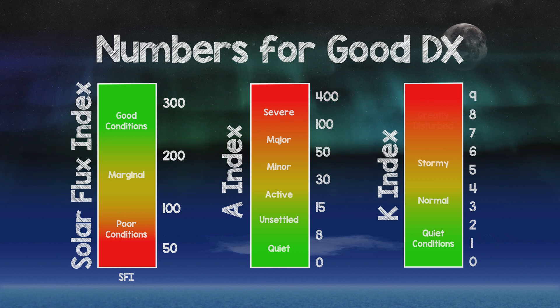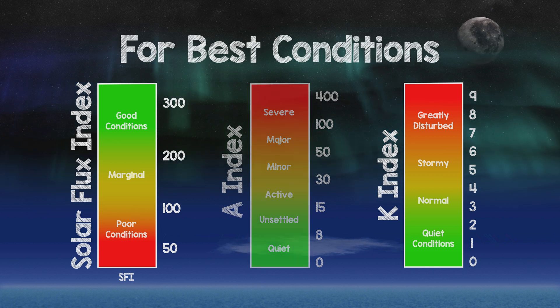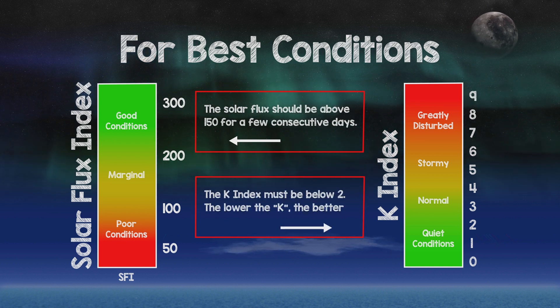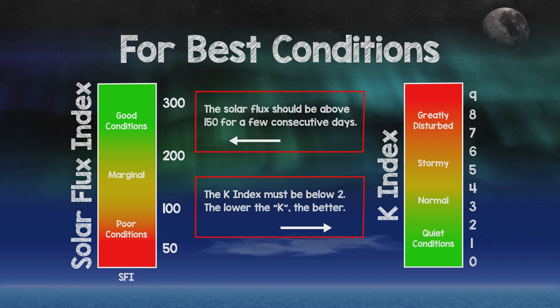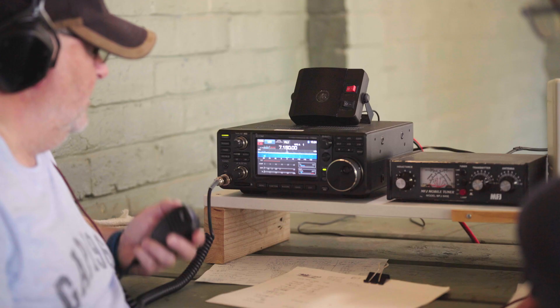The actual amount of depression will depend not only on the severity of the storm, but also its duration. For best conditions, the solar flux should remain above 150 for a few days with the K index below 2. When these conditions have been met, check out the bands and expect some good DX to be about.